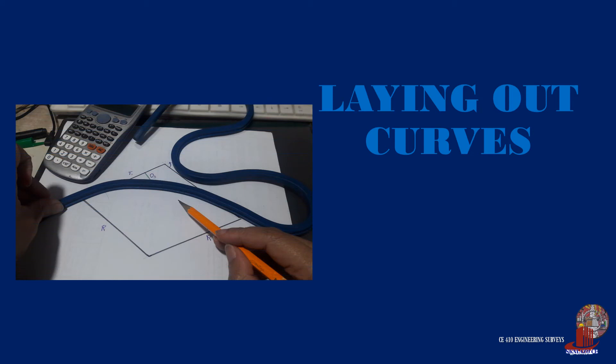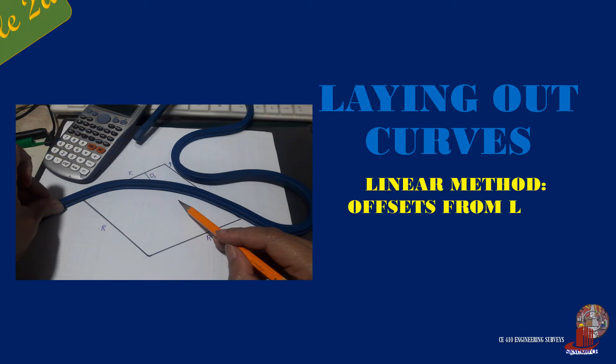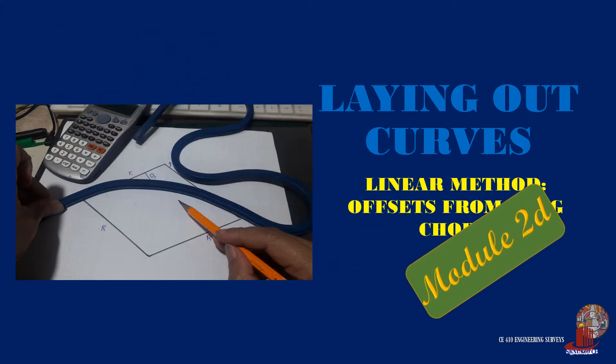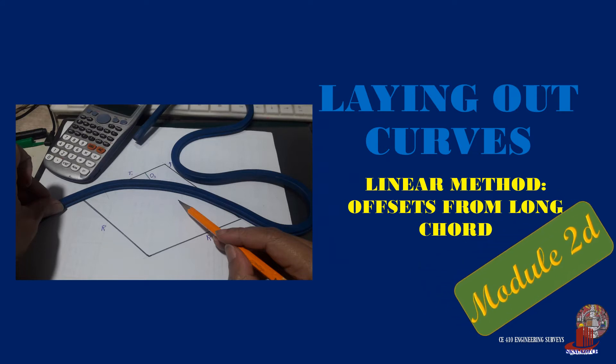Another linear method of staking out a simple curve is through perpendicular offsets from the long cord. Learn the concept and the process of this method here in Engineering Surveys.